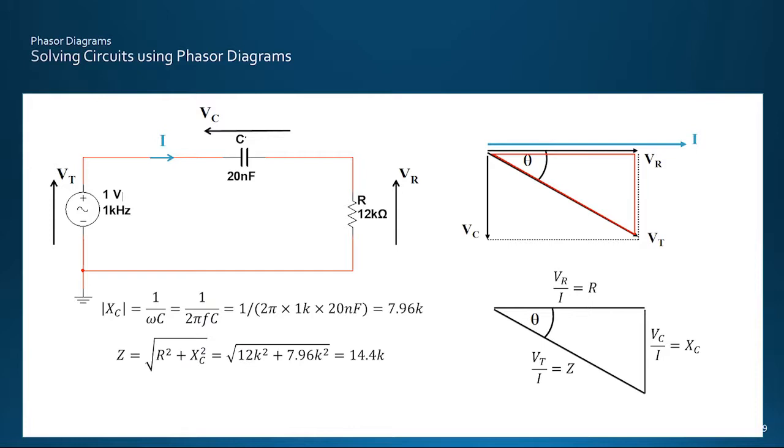This gives us the impedance triangle shown, which is a similar triangle to that in the voltage phase diagram, and on which we can use Pythagoras to find the values of Z from Xc and R as 14.4 kilo ohms.